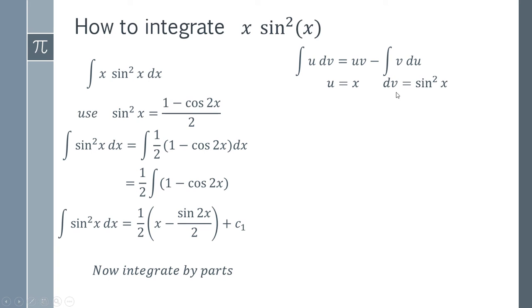So we're taking u equals x and dv is sine squared of x. So we need to get the remaining things in this expression here. So we need du and we need v. We can get du by finding the derivative of this, and we can find v by integrating both sides.